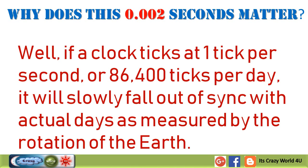Why does this 0.002 seconds matter? Well, if a clock ticks at 1 tick per second, or 86,400 ticks per day, it will slowly fall out of sync with actual days as measured by the rotation of the Earth.